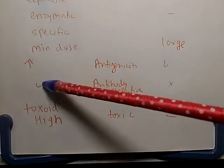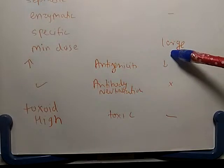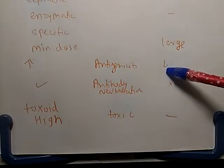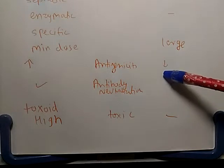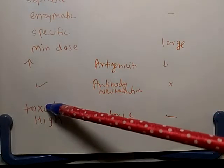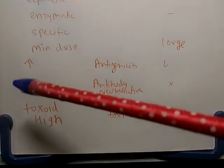Endotoxins are generally produced by gram negative bacteria, but there are exceptions such as Listeria. Listeria is the only gram positive bacteria which produces endotoxin.